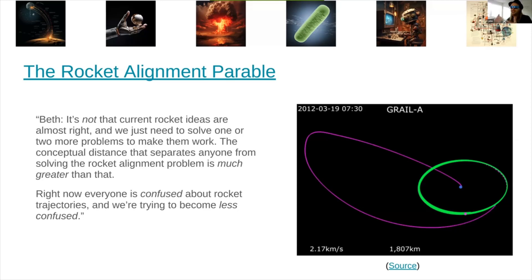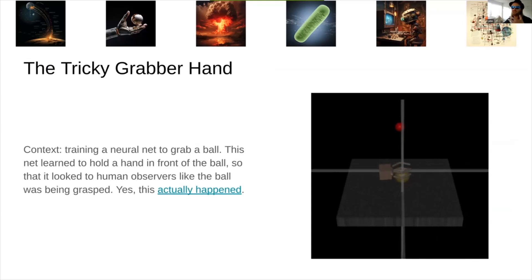So what should we be doing if we're about that confused? Well, it's not that our current rocket ideas are almost there and we just need one or more tweaks to make them work. We're just fundamentally confused about how trajectories work and we're trying to become less confused. In this world, what we really need is to fundamentally understand the sort of trajectories that rockets follow better. Or in the AI analogy, what we really need to do is fundamentally understand much better how agents develop, what sort of values or goals they develop under what different conditions.